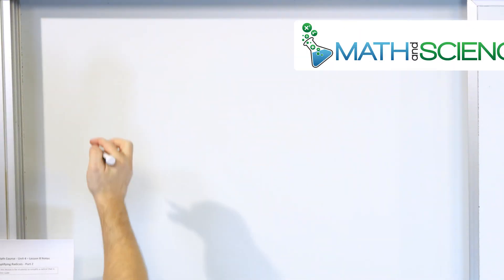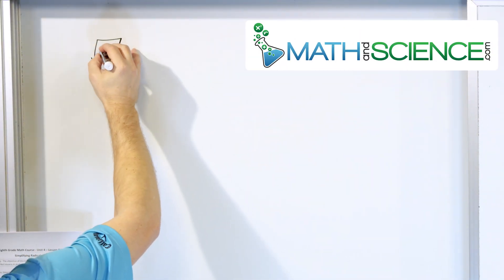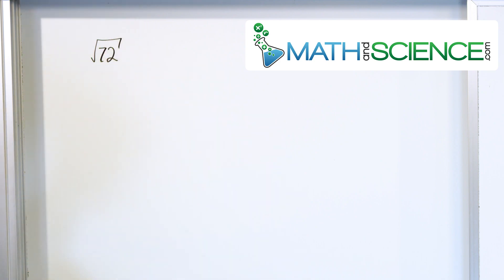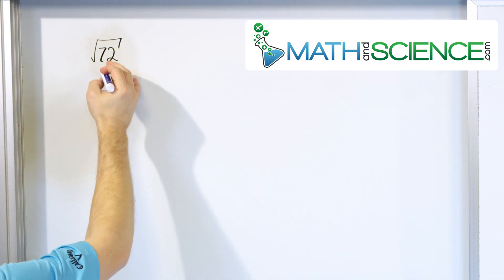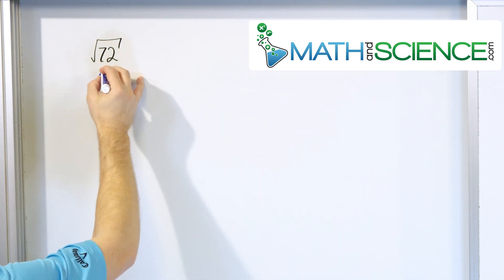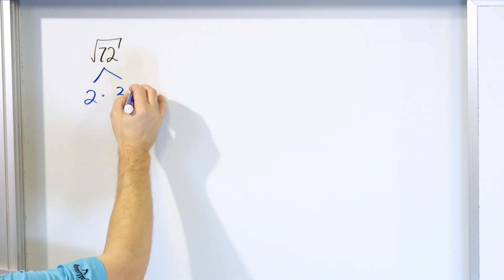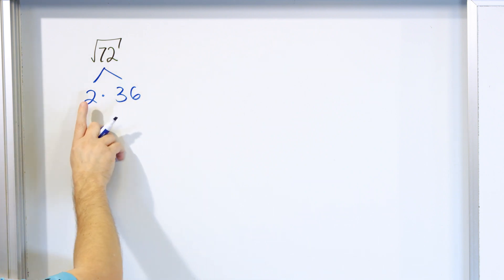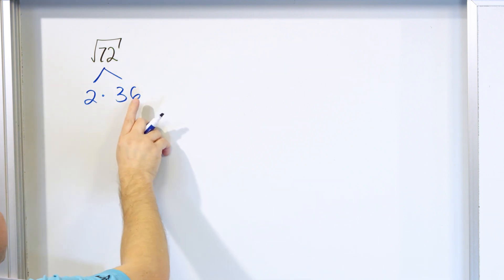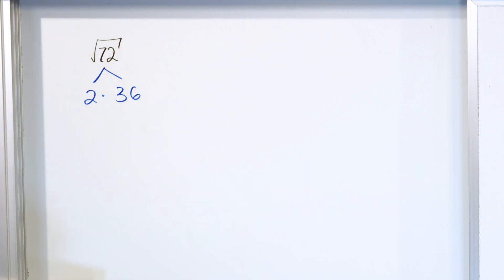Let's take a look at problem number one: square root of 72. The first thing we do is write a factor tree. You think of anything times something else to give you 72. I know that 2 times 36 is 72 — 2 times 30 is 60, 2 times 6 is 12, and 60 plus 12 is 72.